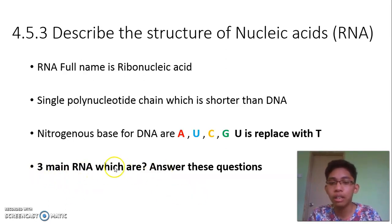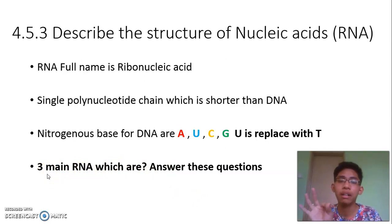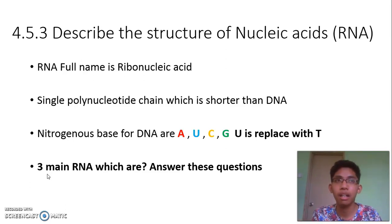Looking at the textbook — what are the three main types of RNA? The three main types of RNA are mRNA (messenger RNA), tRNA (transfer RNA), and rRNA (ribosomal RNA).